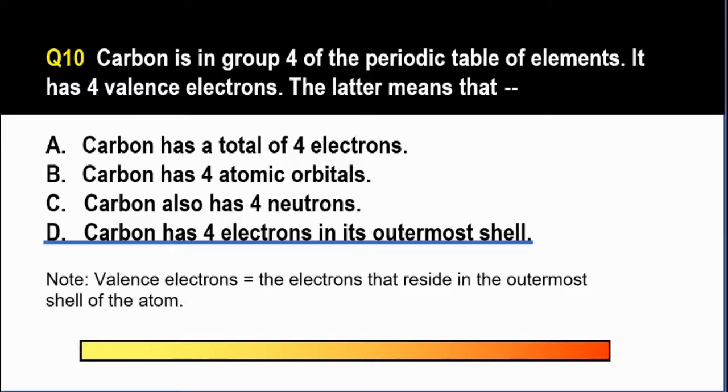So the correct answer is letter D. And letter A, carbon has a total of 4 electrons. That statement would be incorrect.